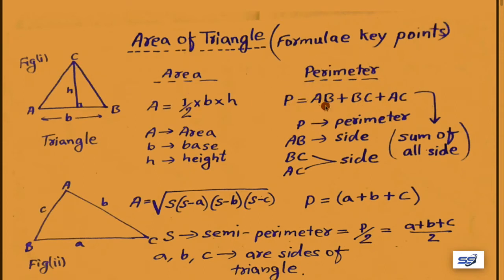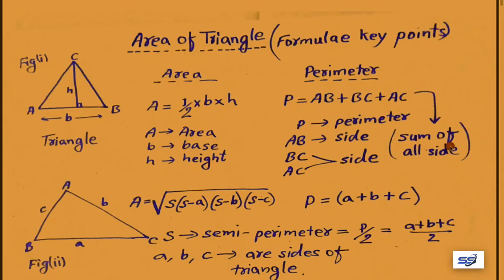The perimeter P equals AB plus BC plus AC. Here AB, BC, and AC are all sides; their sum gives the perimeter of the triangle. In the next figure, triangle ABC has sides given but base and height are unidentified.